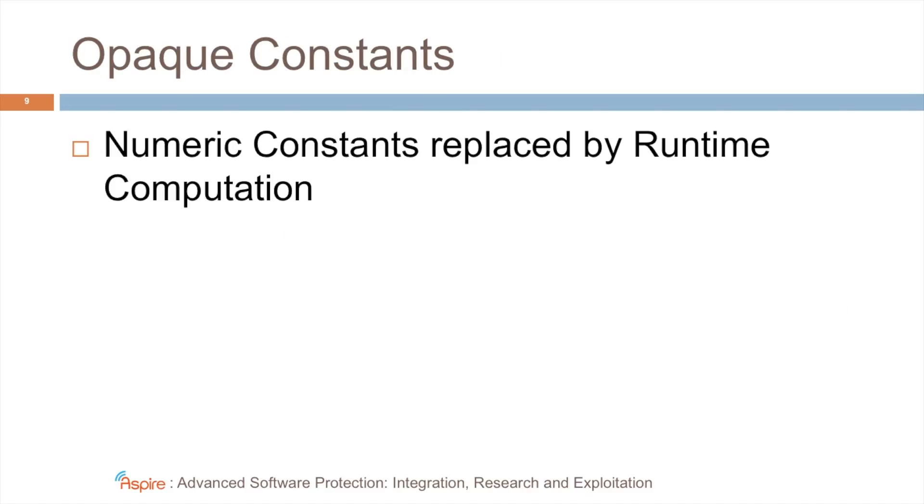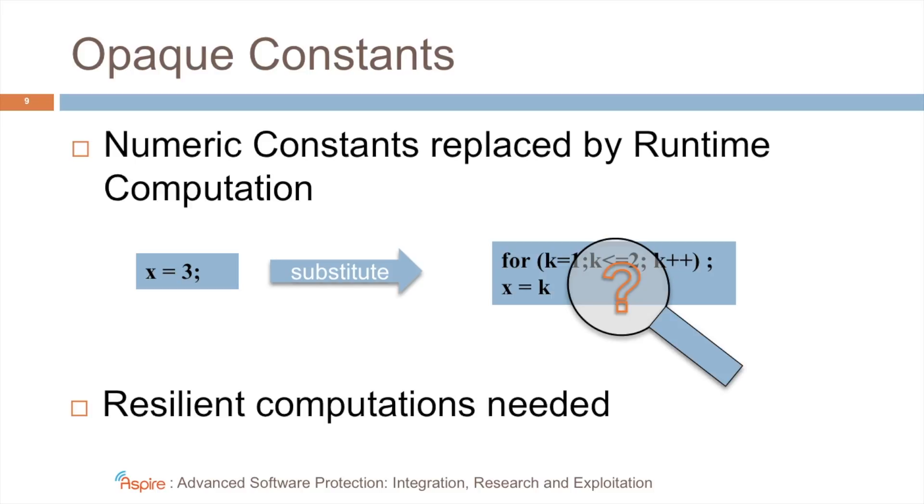As for opaque constants, the goal is to replace numeric constants by runtime computations. For example, we want to replace the assignment on the left with some code that is a dynamic computation, and that needs to be analyzed to derive the value of X. In this case, the major problem as a defender is to make that code resilient. It should not be easy for an attacker to analyze it and still obtain the numeric constant.